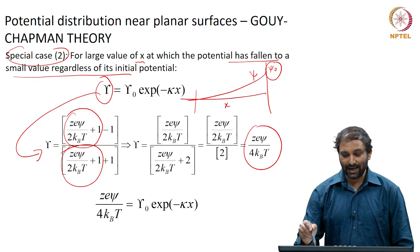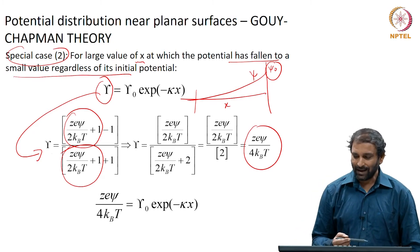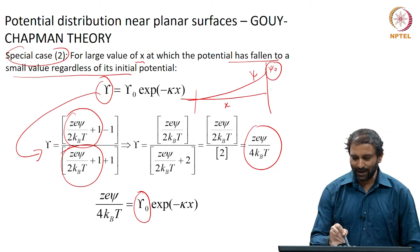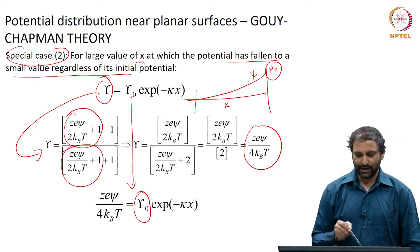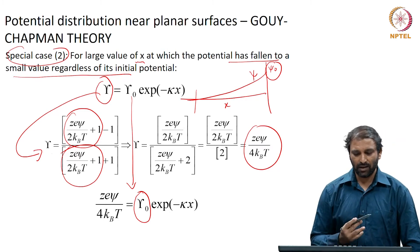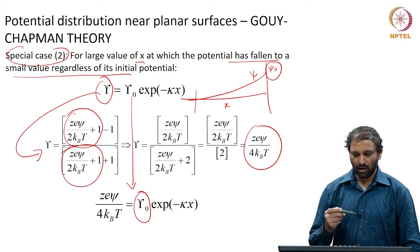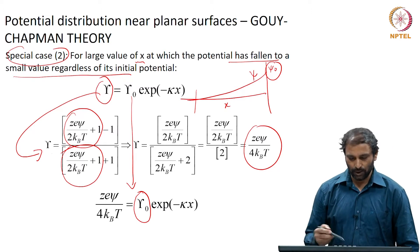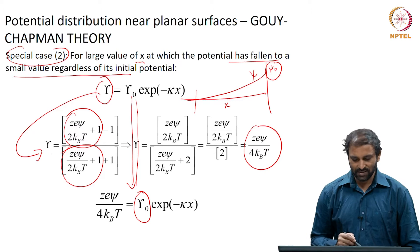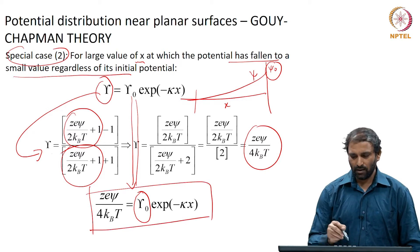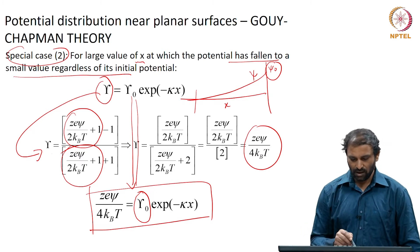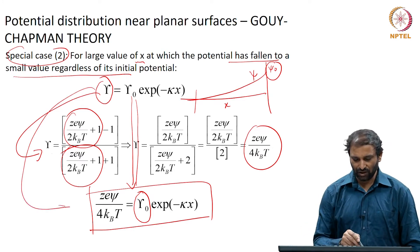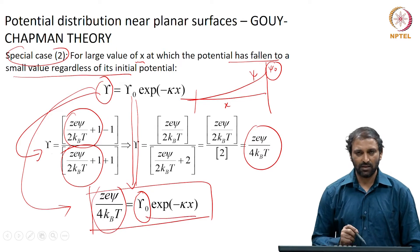However, because psi_0 could be any potential, we have to retain gamma_0 as it is, since we cannot invoke the low potential case for gamma_0. Gamma_0 could be significant — psi_0 could take any value — therefore we retain gamma_0 as gamma_0. For the case of very large x where the potential has fallen to a very small value regardless of the initial potential, the Gouy-Chapman theory simplifies to: z e psi / 4 k_B T on the left-hand side, with the right-hand side remaining the same.